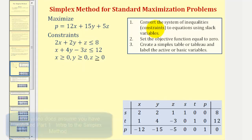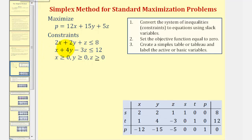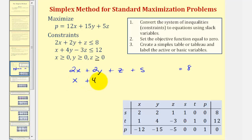The first step is to convert the system of inequalities to equations using slack variables. We're not concerned about the last three inequalities telling us that x, y, and z are non-negative. We'll write the first two inequalities as equations. Since the left side is less than or equal to the right side, we add a slack variable to make them equal. The first equation becomes 2x plus 2y plus z plus s equals 8, and the second becomes x plus 4y minus 3z plus t equals 12.